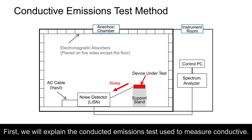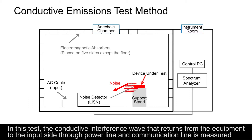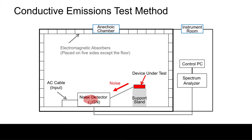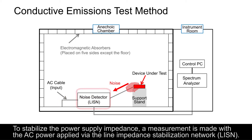First, we will explain the conductive emission test used to measure conductive emission. In this test, the conductive interference wave that returns from the equipment to the input side through the power line and communication line is measured to make sure that the interference wave does not exceed the limit. To stabilize the power supply impedance, a measurement is made with the AC power applied via the line impedance stabilization network.